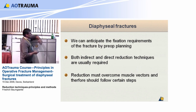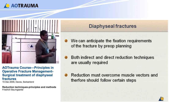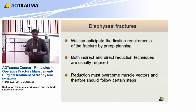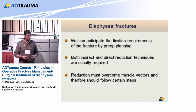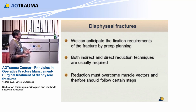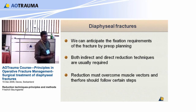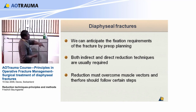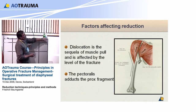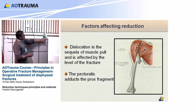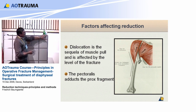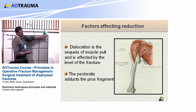But what must we overcome? We have fractures that displace, and very often they will displace in a very characteristic pattern. We must overcome muscle vectors, and therefore we should follow certain steps when reducing. If you look at this fracture, look at the position of the muscles here. The dislocation of this fracture is a sequela of the muscle pull of the pectoralis major. Depending on where this fracture is, it will dislocate in a different way.